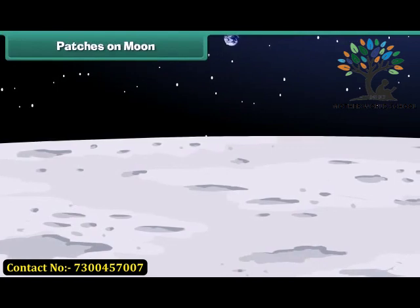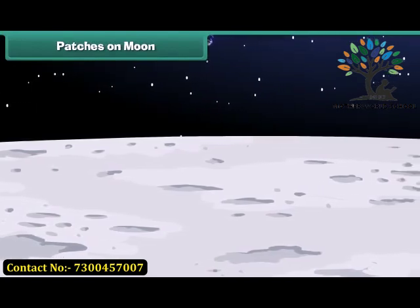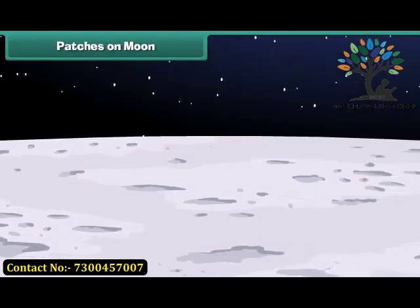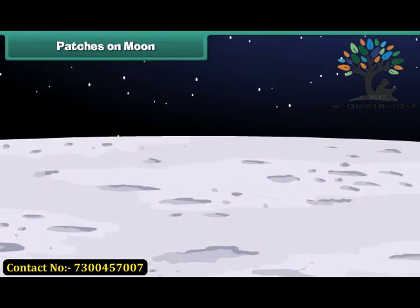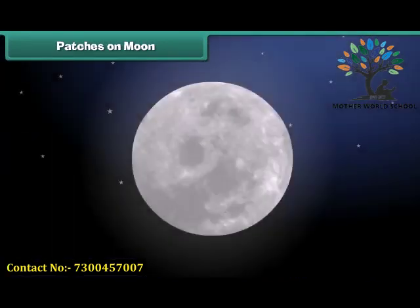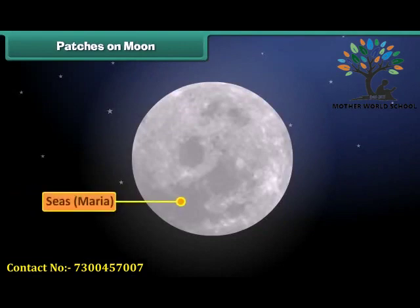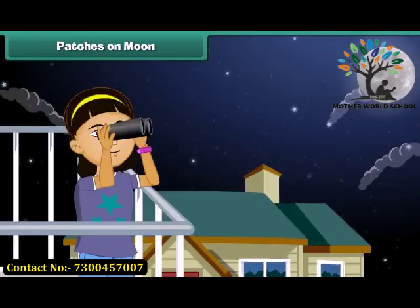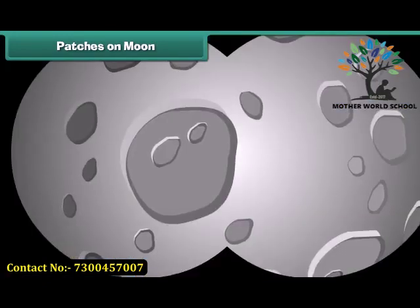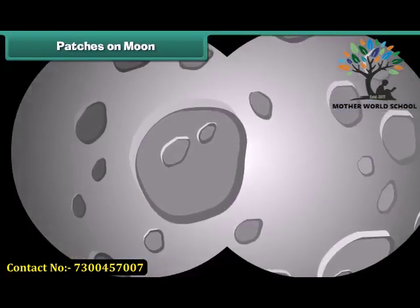Even though there is no liquid water on the moon, it has many interesting features such as craters, mountains, and lava plains. The dark patches on the moon's surface are plains called seas or maria. They are called maria because early astronomers thought these areas were great seas. The lighter patches are mountains. You can use a pair of binoculars on a clear night to see the craters formed by ancient meteor collisions.